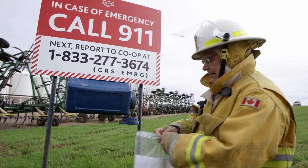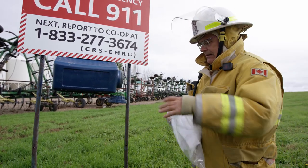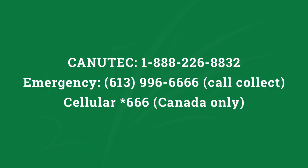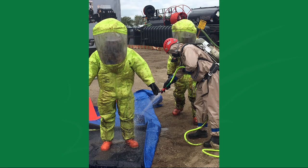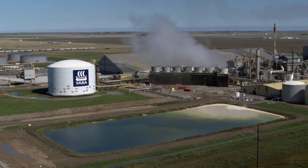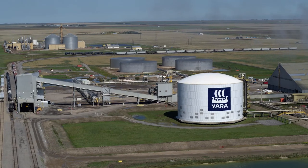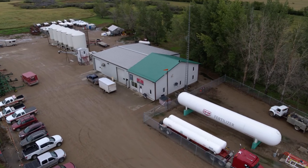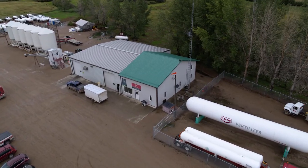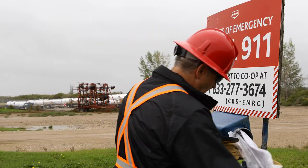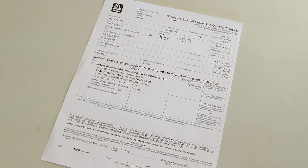Canutech is the Canadian transport emergency center operated by Transport Canada. Canutech can provide information and advice on dangerous goods to emergency responders and can provide assistance in identifying and locating emergency response personnel trained and equipped for dealing with dangerous good emergencies. For agricultural anhydrous ammonia, manufacturers of the product can provide expertise and have trained emergency response capacity. All agricultural operations handling anhydrous ammonia are required to have an emergency response plan. Emergency contact information is available at the site or on the bill of lading for transportation incidents.